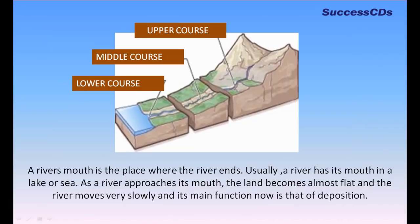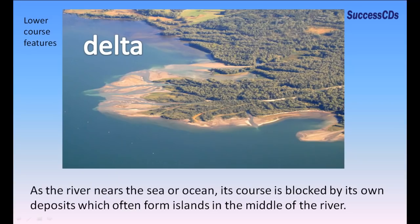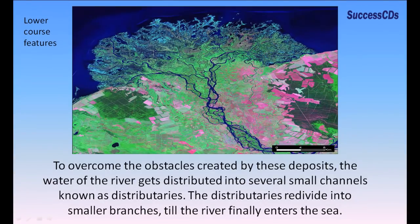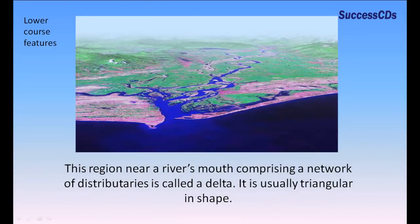A river's mouth is the place where the river ends. Usually, a river has its mouth in a lake or sea. As a river approaches its mouth, the land becomes almost flat and the river moves very slowly, with its main function being deposition. As the river nears the sea or ocean, its course is blocked by its own deposits, which often form islands in the middle of the river. To overcome these obstacles, the water gets distributed into several small channels known as distributaries. The distributaries re-divide into smaller branches till the river finally enters the sea. This region near a river's mouth comprising a network of distributaries is called a delta.